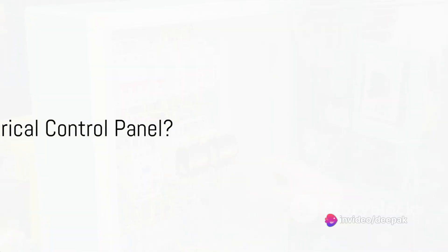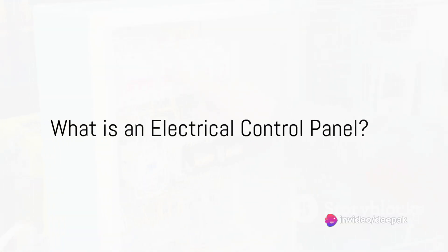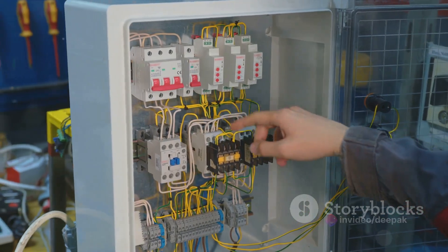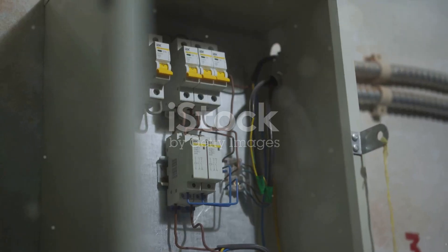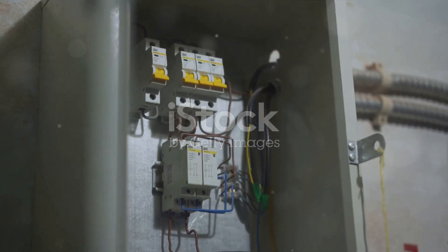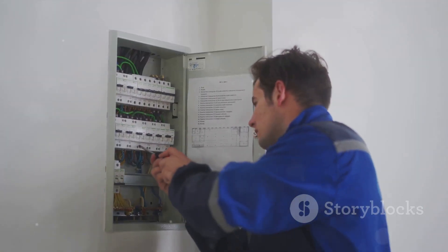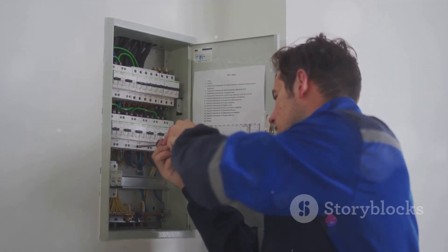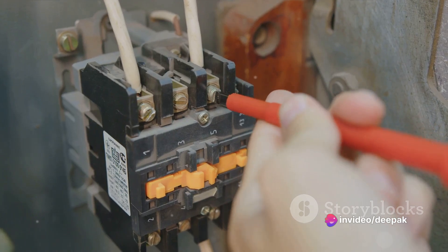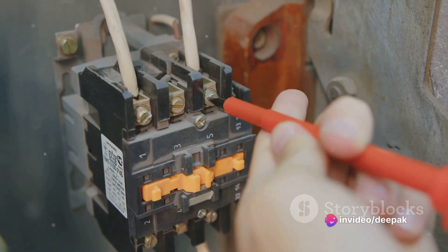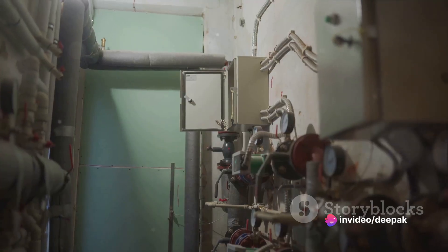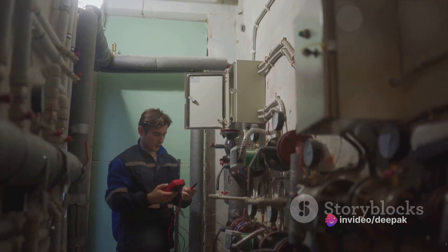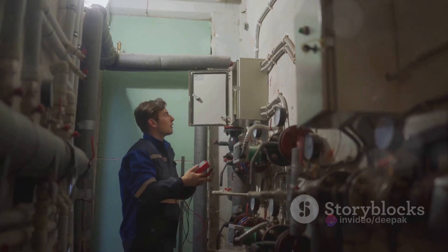An electrical control panel is a centralized hub of a building's electrical system. It's where the power source is divided into subsidiary circuits to distribute electricity throughout the building. It's like the brain of the electrical system, controlling all the operations and ensuring everything runs smoothly.